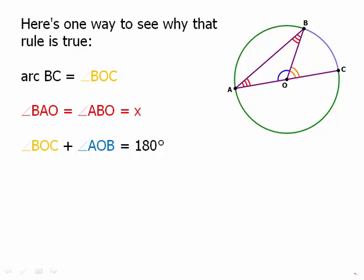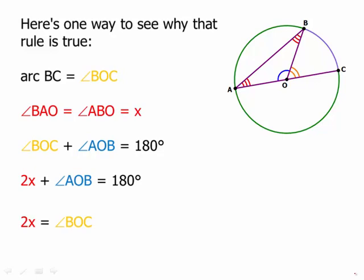Also, we add the three angles in the triangle: 2X (the two red angles) plus the blue angle, which also equals 180. So we have: gold plus blue equals 180, and 2X plus blue equals 180. That means 2X equals BOC (the gold central angle). Dividing by 2, X equals one-half the central angle, and since the central angle equals the arc, X equals one-half the arc. The measure of the inscribed angle equals half the arc. If you remember this argument, it will help you remember the fact much more deeply.